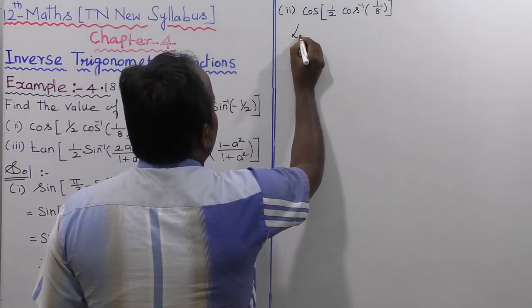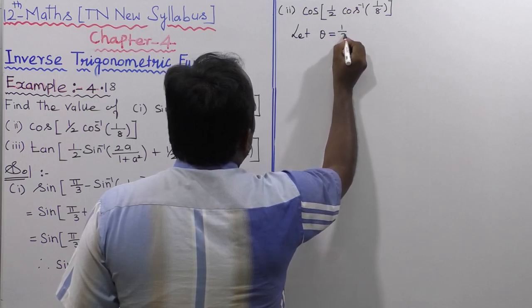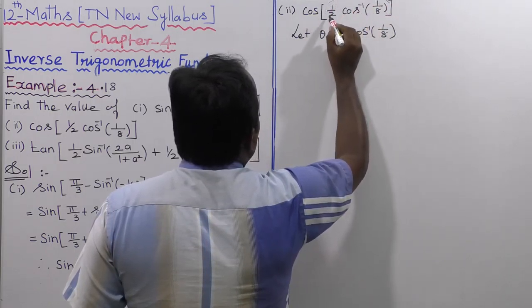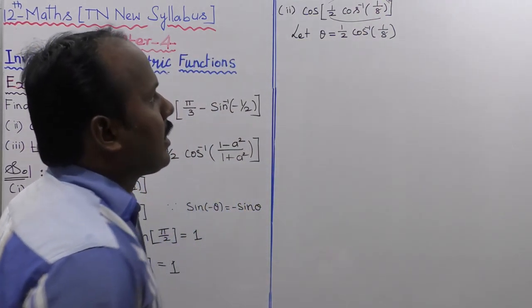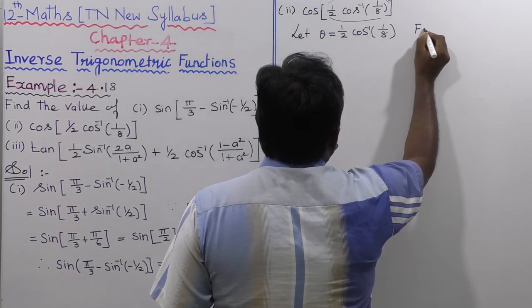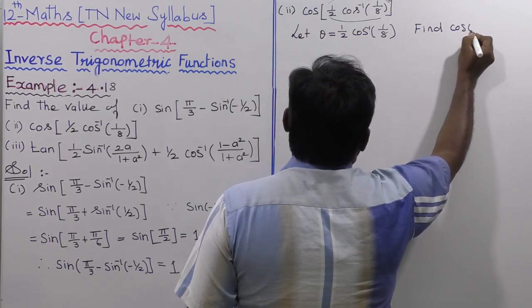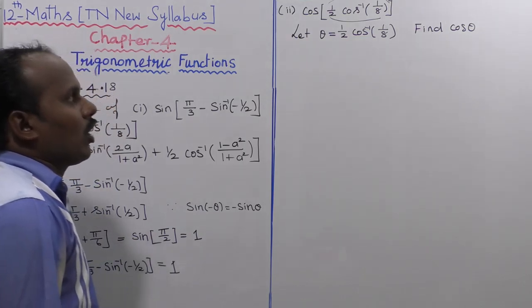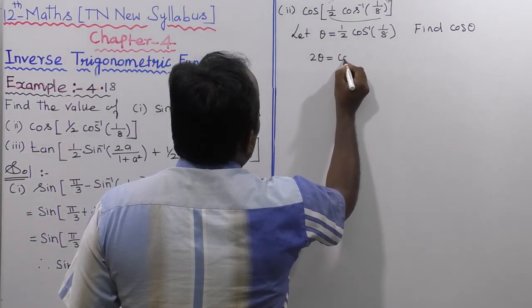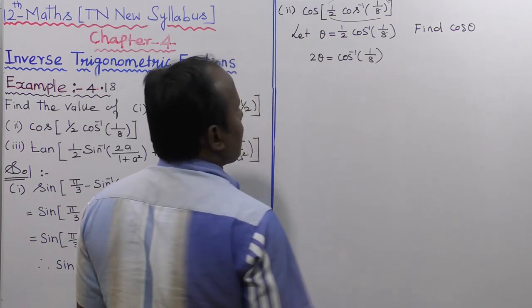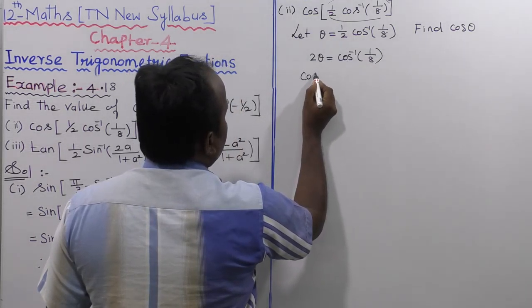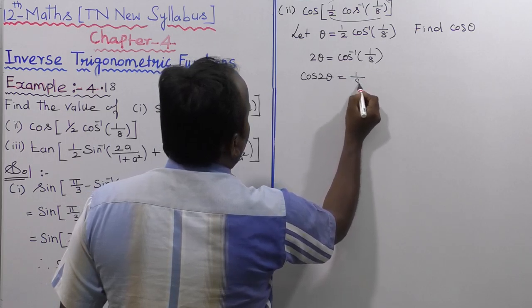Let θ = 1/2 · cos⁻¹(1/8), so we need to find cos θ. By cross multiplication, 2θ = cos⁻¹(1/8). Applying cos to both sides, cos(2θ) = 1/8.